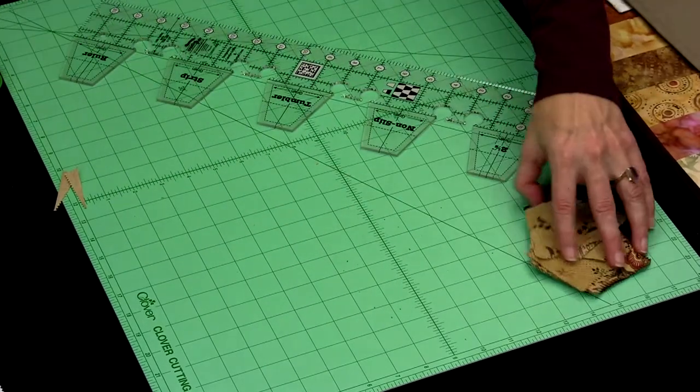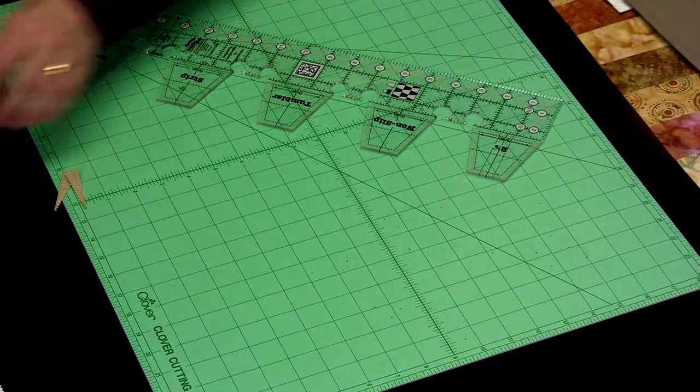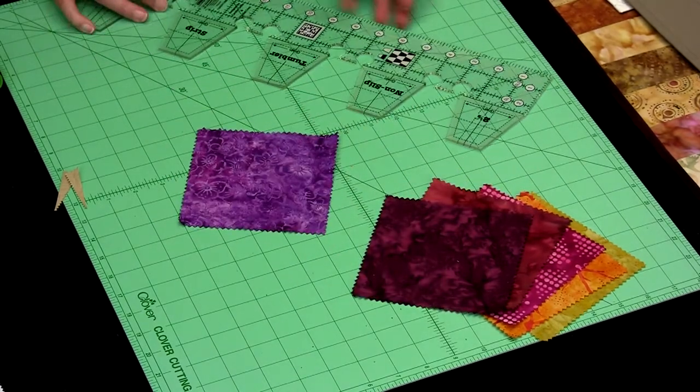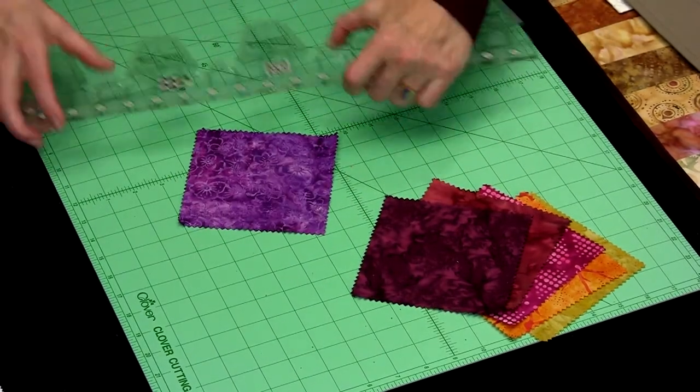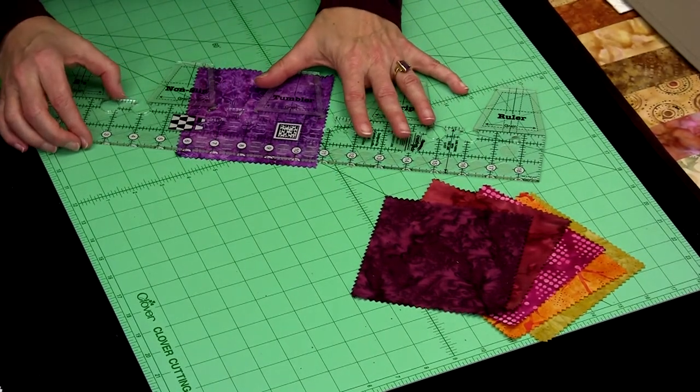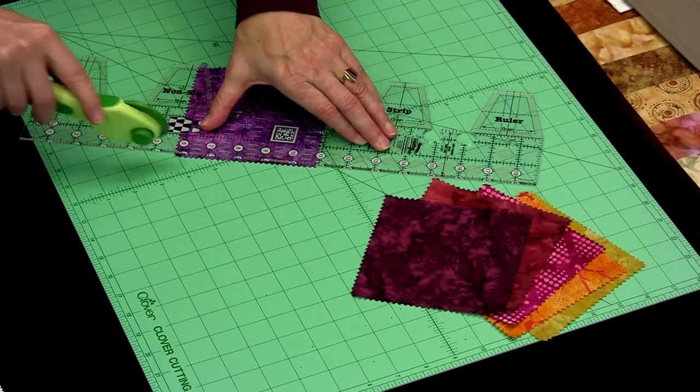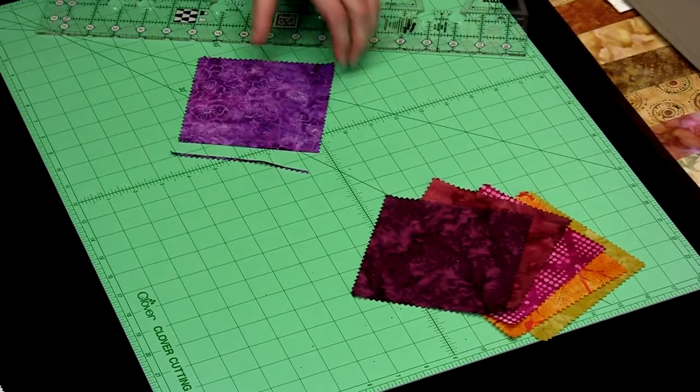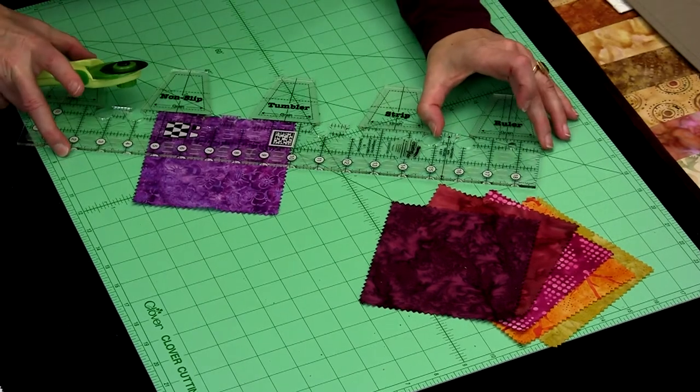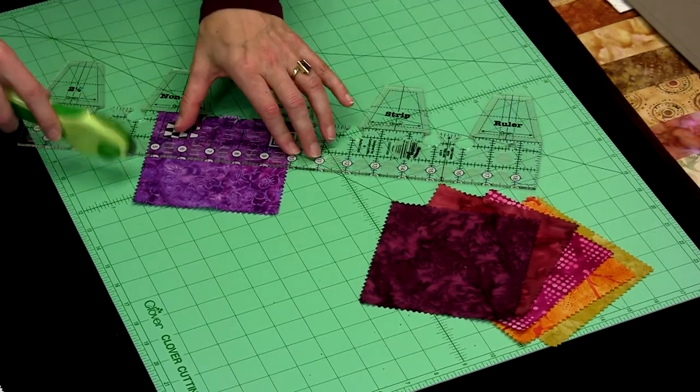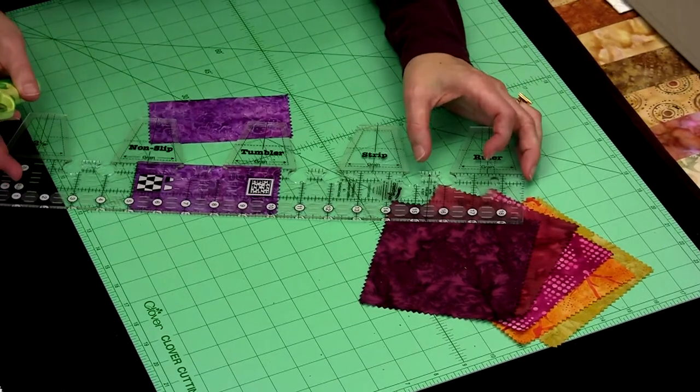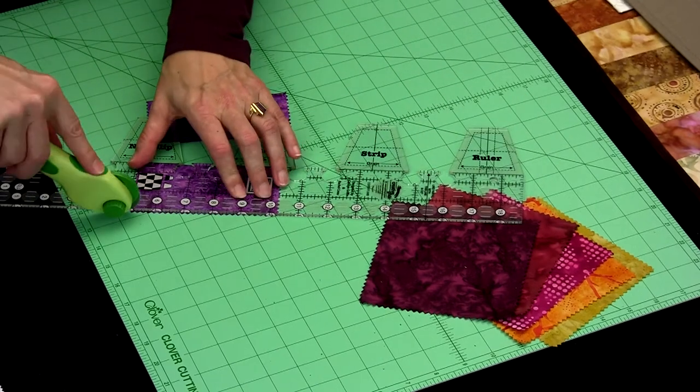You can also work with 5 inch charm squares. We will use the ruler to cut this into two, 2½ inch strips. So I can cut this straight. There we go. A 2½ inch strip. And here's our second.